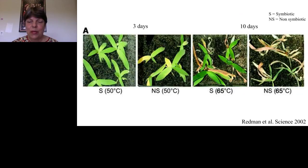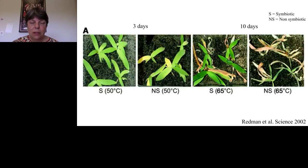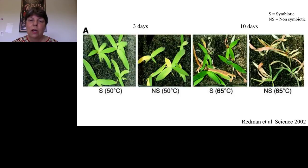In an experiment done more than 10 years ago, the Dicanthelium plants were grown in the laboratory under symbiotic (S) and non-symbiotic (NS) conditions. The symbiotic plants did fine at 50 degrees and even 65 degrees soil temperature, whereas the non-symbiotic plants didn't do well and all died at 65 degrees. This is where I got involved — I had been studying plant viruses with a persistent lifestyle, meaning they stay in a single host for many generations.